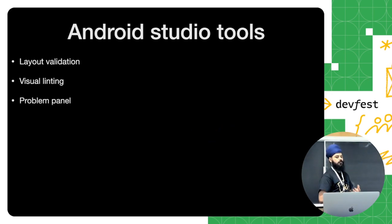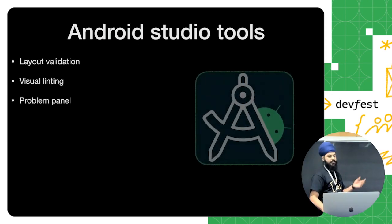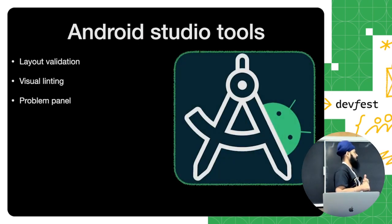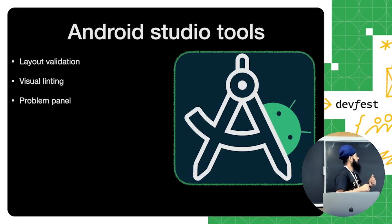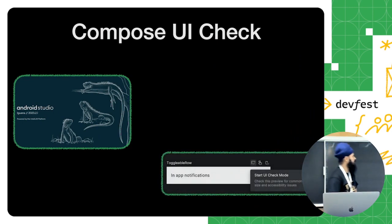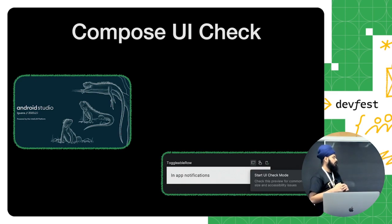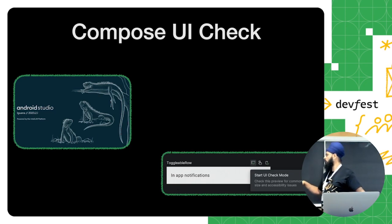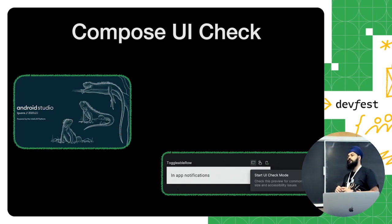We also have a couple of built-in tools in Android Studio: layout validation, visual linting, and the problem panel. Starting with Android Studio Iguana, there is a 'Start UI Check' tool — similar to the accessibility scanner for XML layouts, but now for Compose previews. You click the icon at the top, it runs the UI check mode, and reports all issues for the given Compose view.